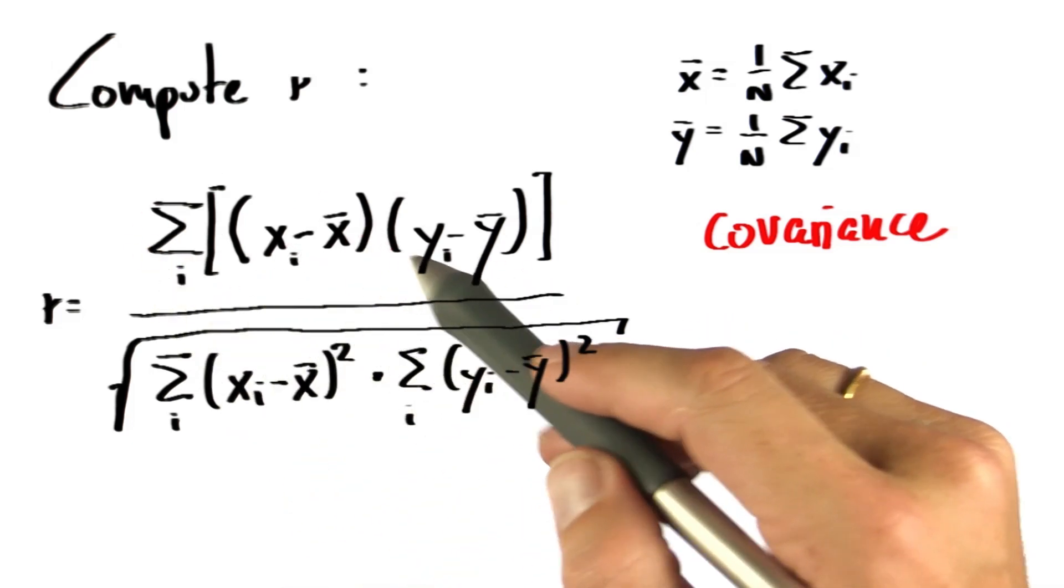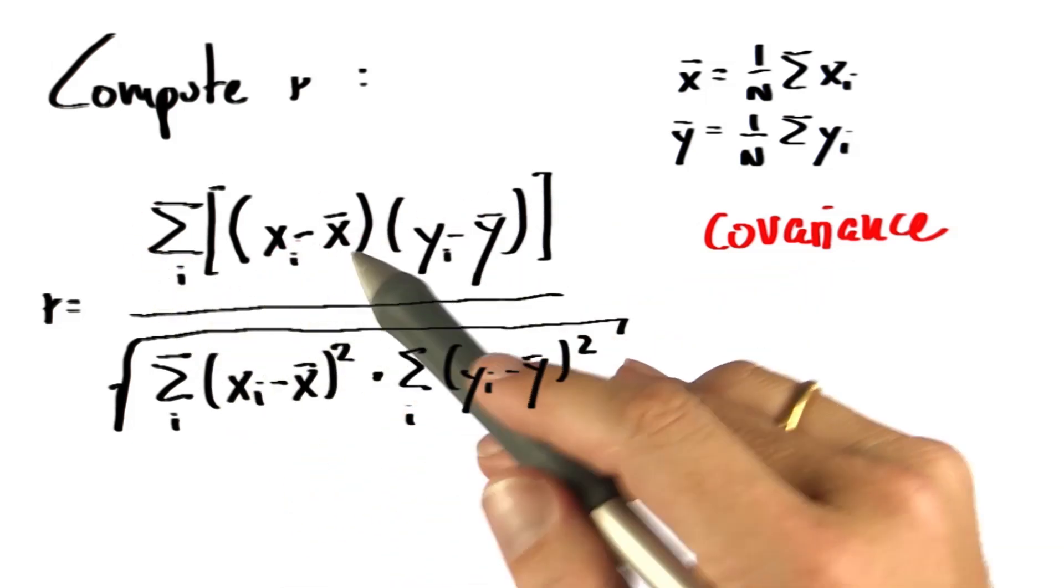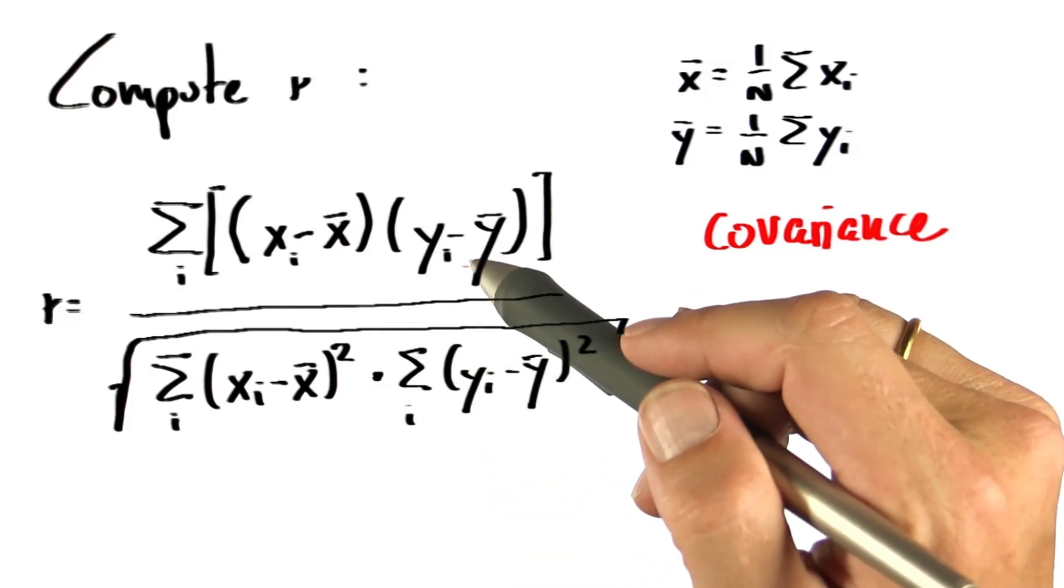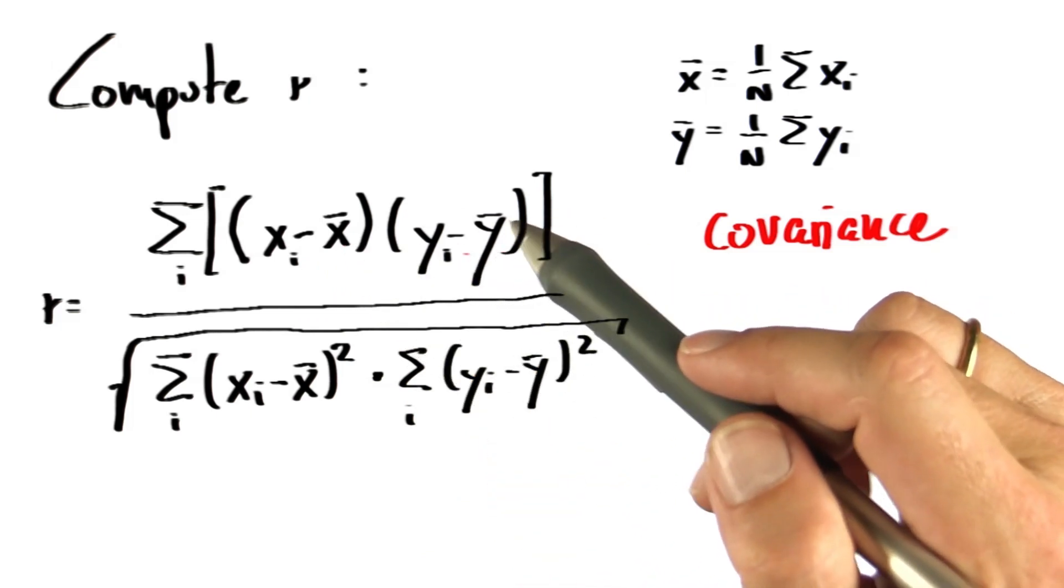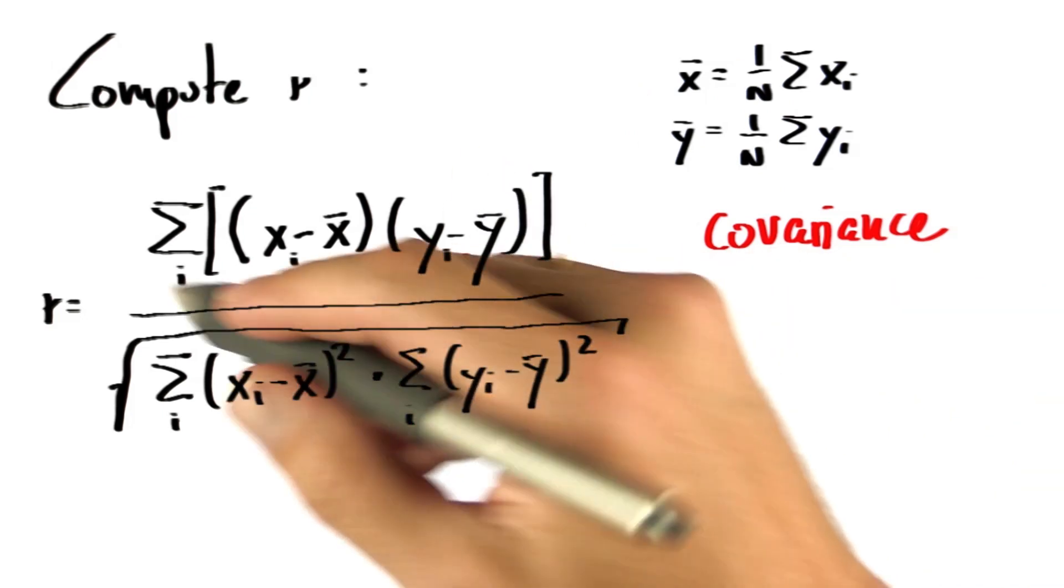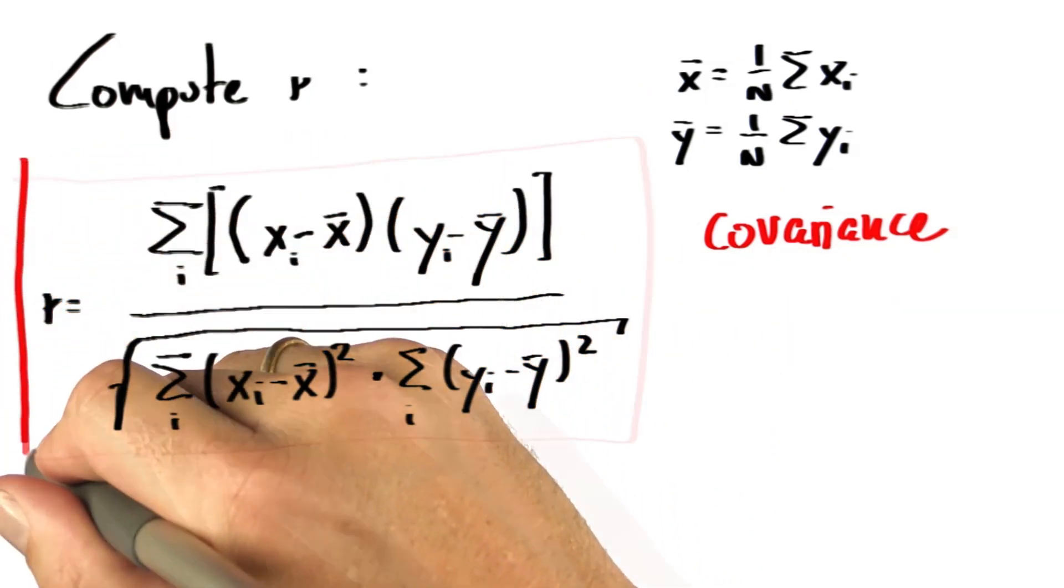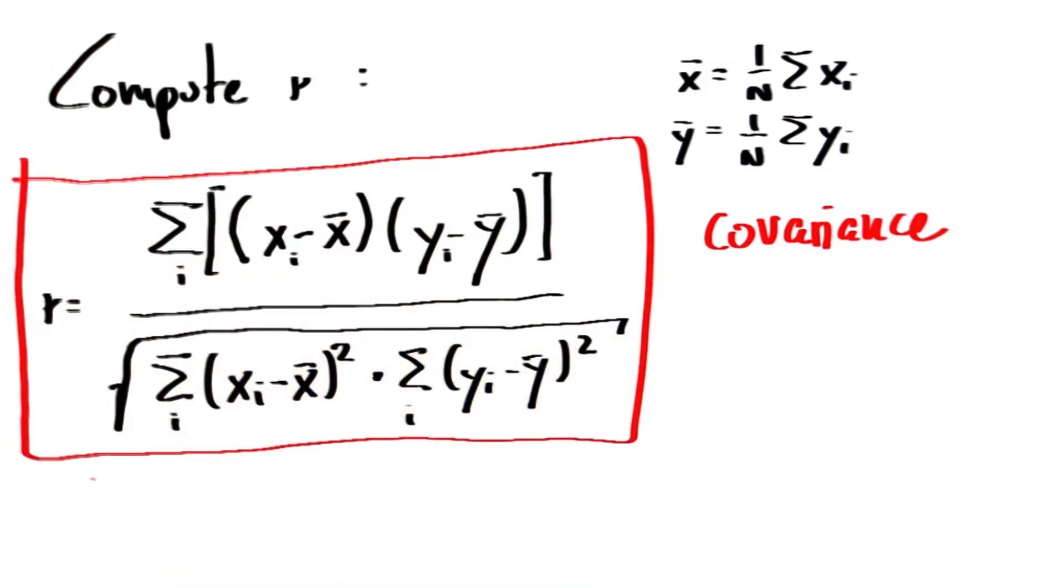When that ratio becomes zero, then the numerator is zero, which means our errors cancel each other out. They are very different for x and for y under any linear model. So this complicated formula is what's called the correlation coefficient r. So let's try this out.